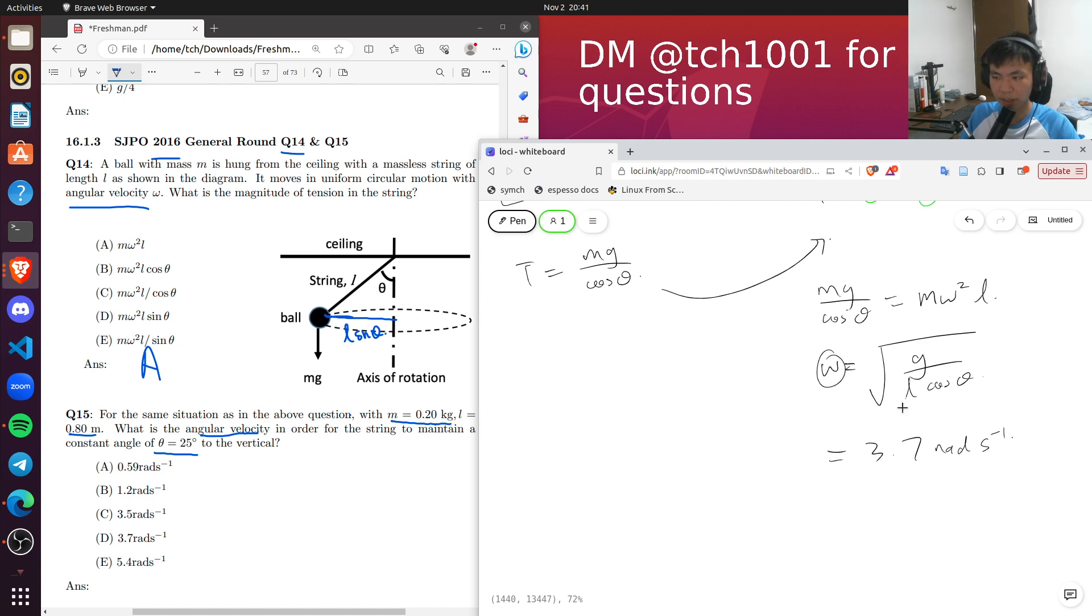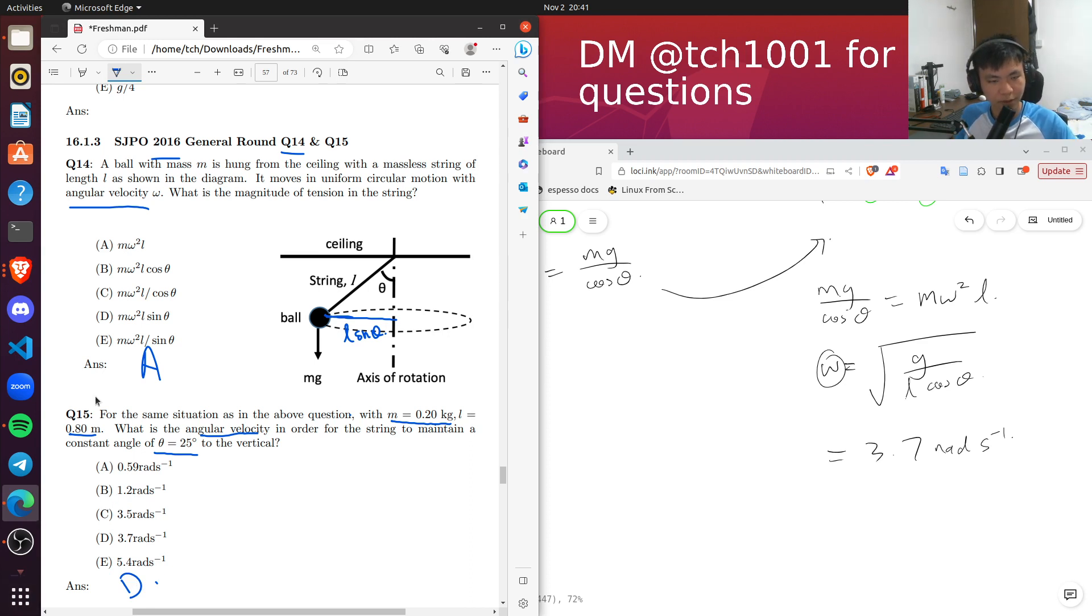Remember, the units of omega are radians per second. So the answer is D. That's how you do question 15. I'll see you in the next question.